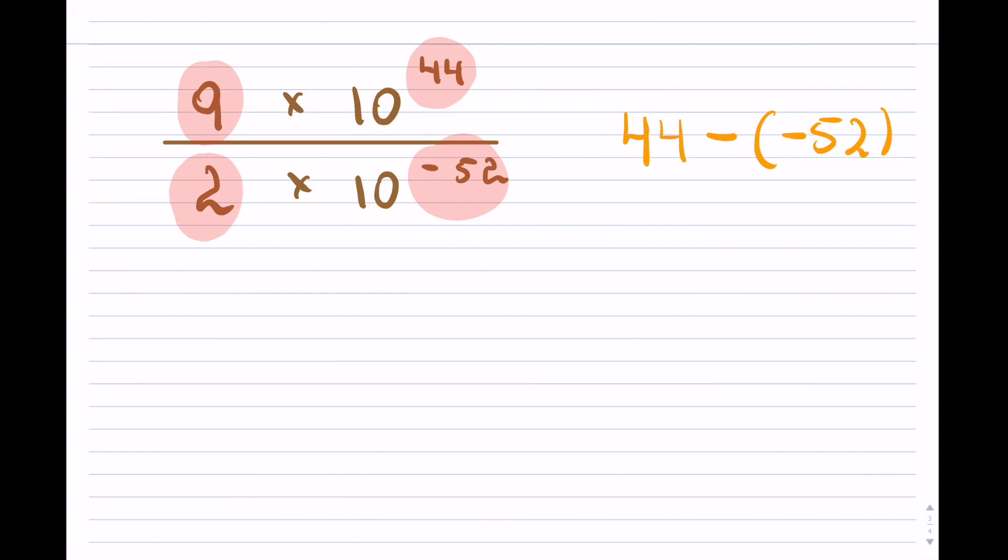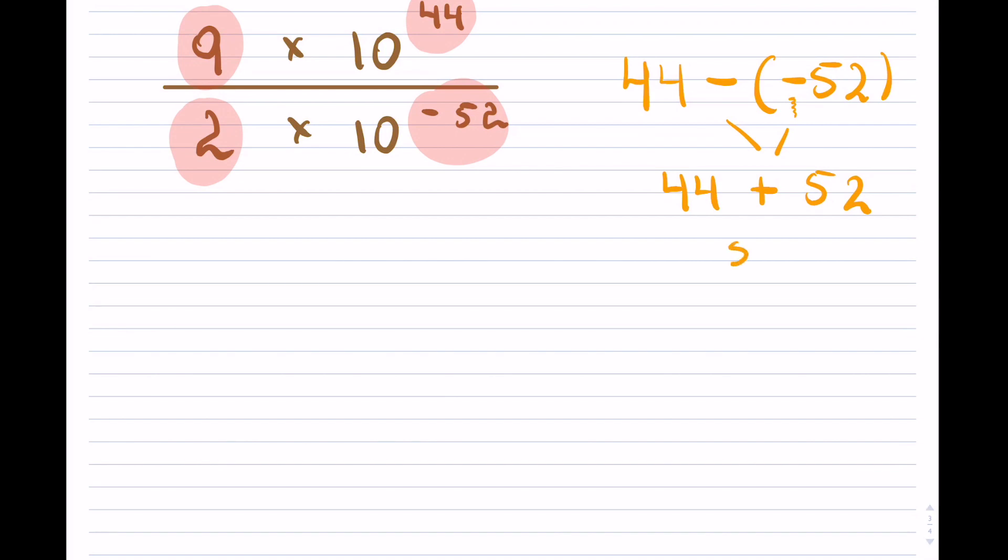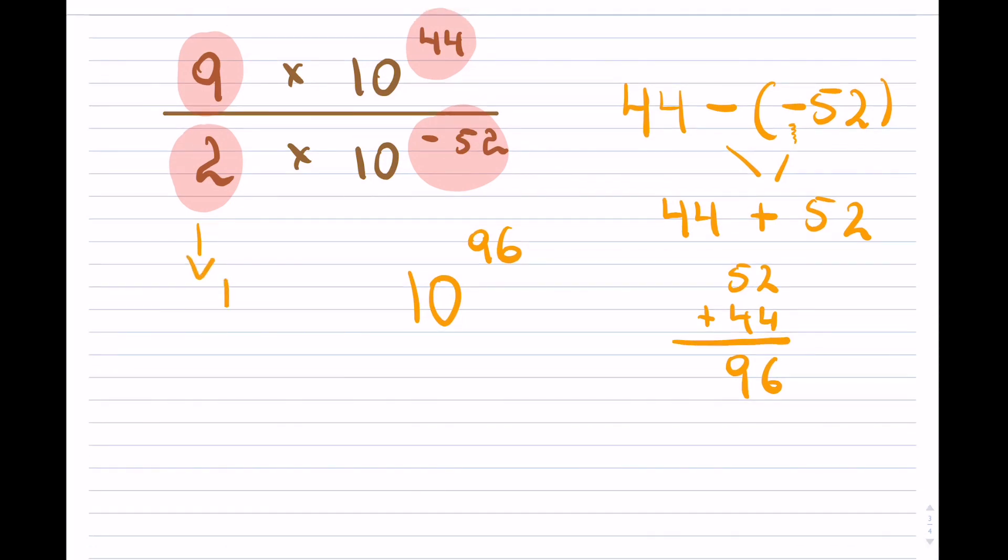And what I mean here to be careful is because you're dividing, okay, you're going to be subtracting, but you're subtracting a negative, so this negative and negative is positive. And that's what you have to be careful about, so now we're actually just adding these two numbers together. Okay, so the exponent becomes 96. You have to be careful with that. Now I have in the previous example already done 9 divided by 2, so that was 4.5. And that completes this question.